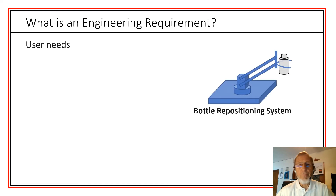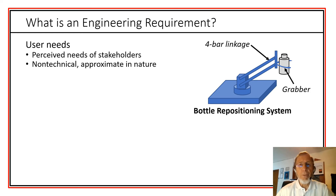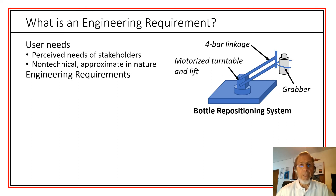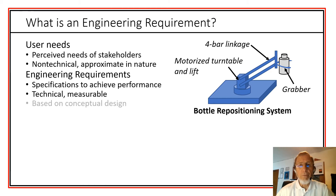What is an engineering requirement? We had user needs — take, for example, this simple system of positioning a bottle. We have needs perceived by stakeholders: what it should do, how it should do it. These are typically non-technical and approximate in nature. An engineering requirement is a clear specification needed to achieve the desired performance. It's often technical and measurable, and it is based on our conceptual design. So we're now developing measurable technical requirements for that concept to meet the needs.